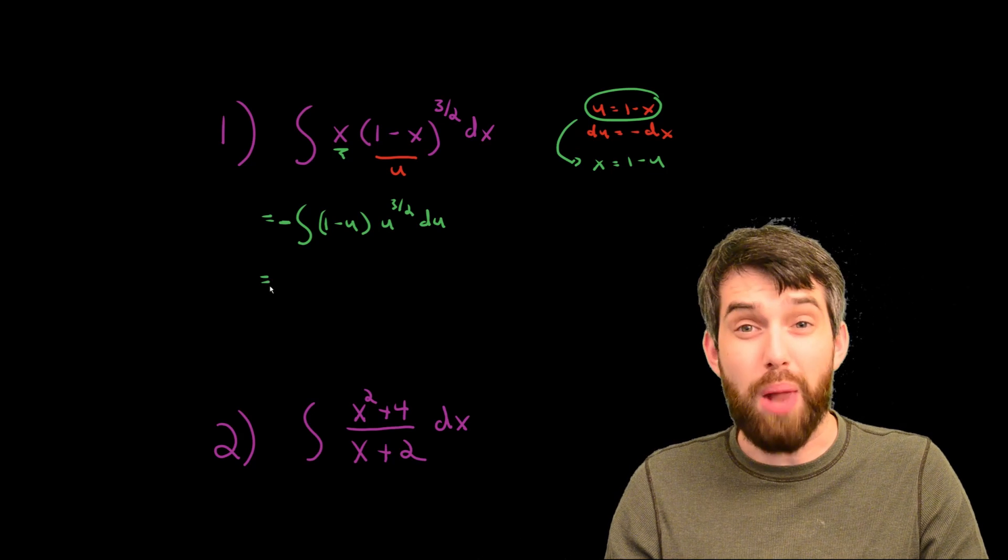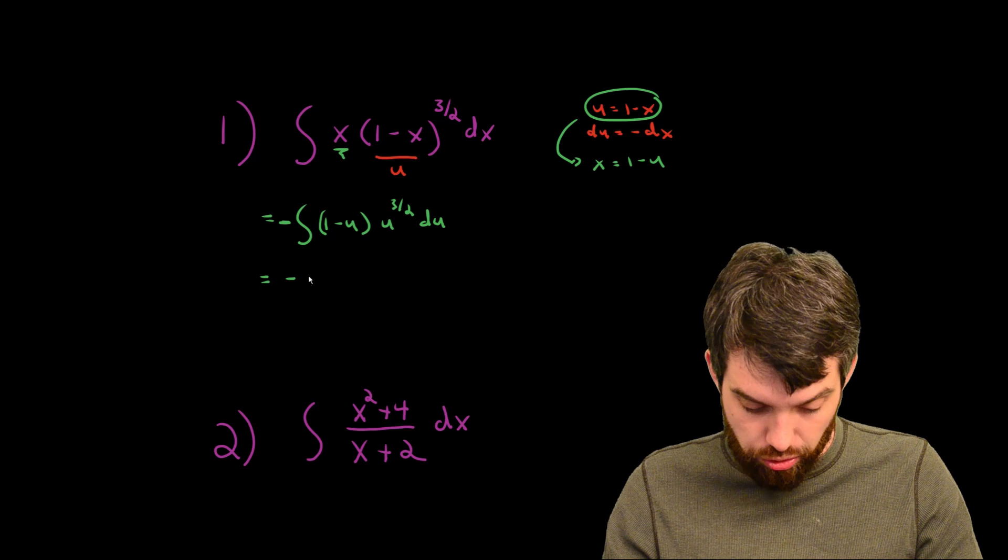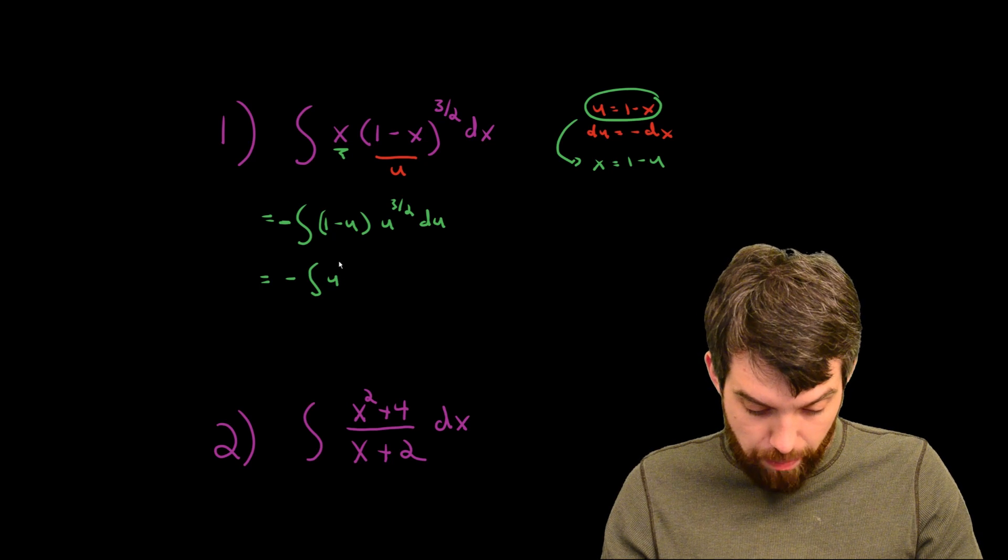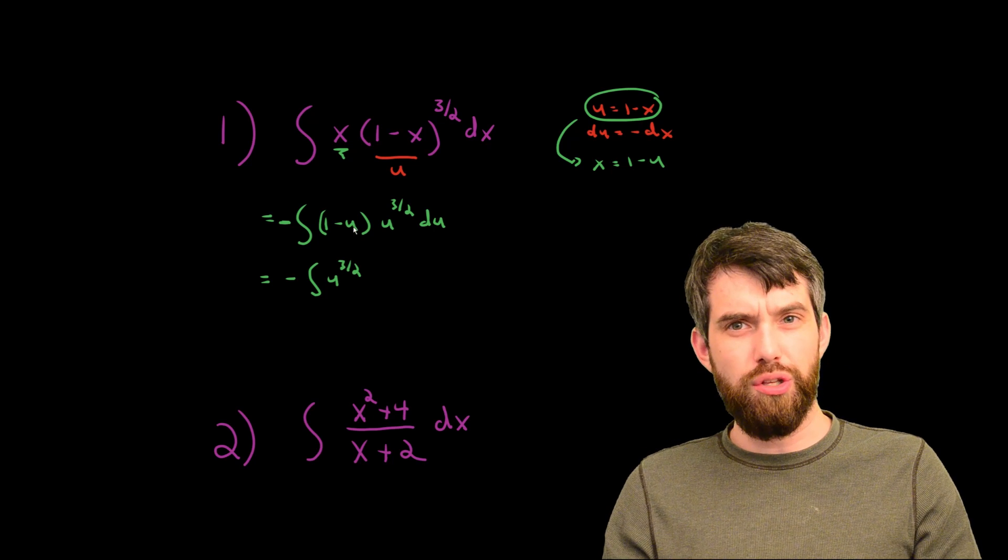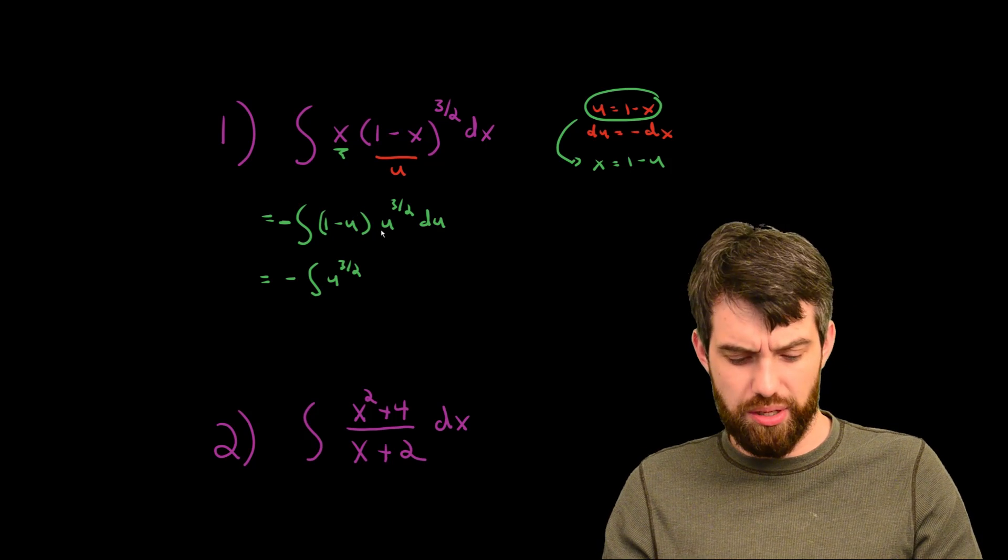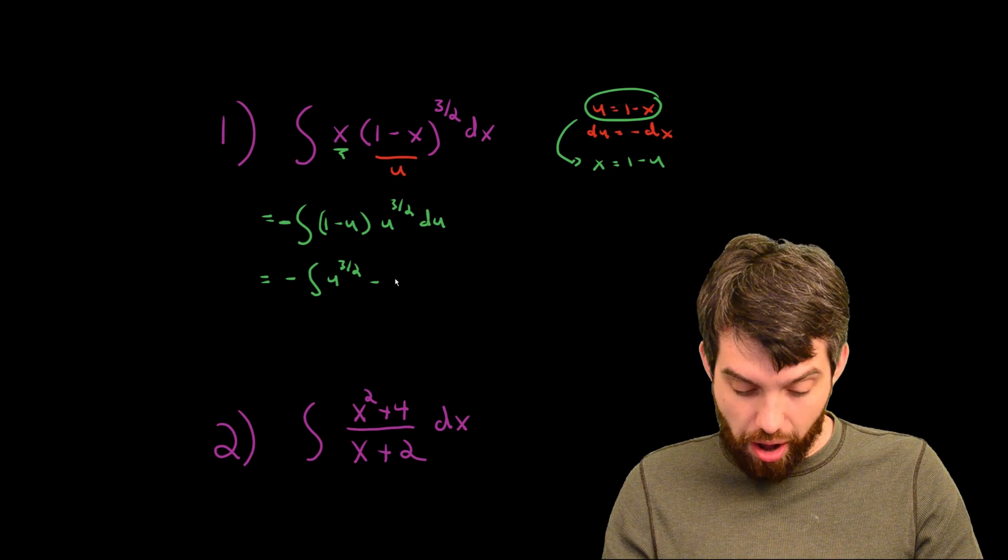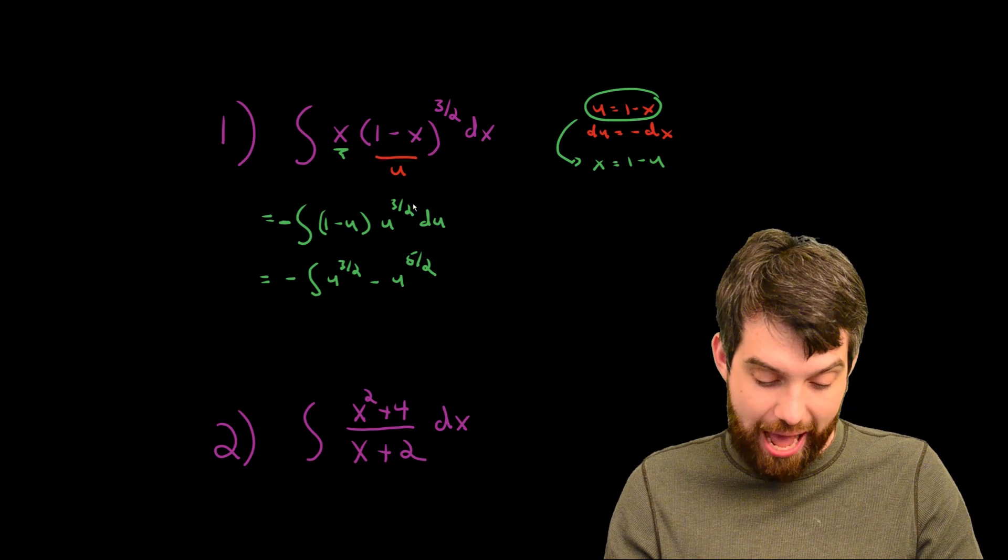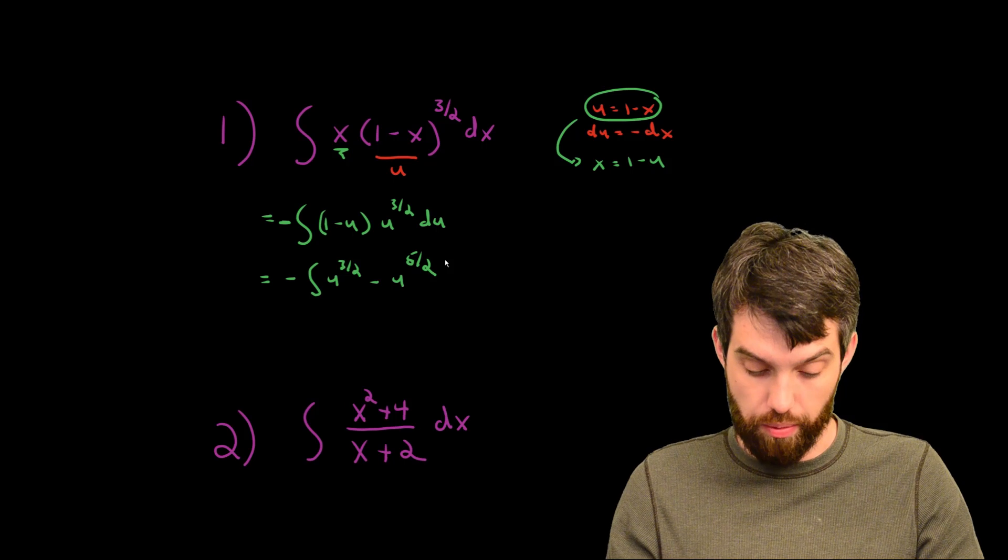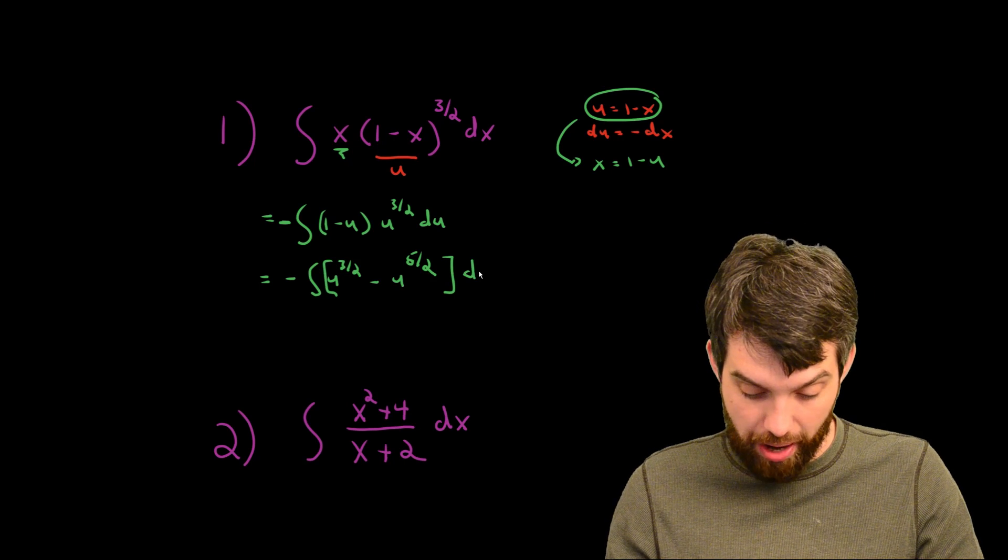Now this is something that I think I can manipulate. I'm going to multiply it out. This is minus, first of all, the 1 and the u creates u to the power of 3 halves. And then I'm going to have a minus u to the 1 times u to the 3 halves. In other words, what I'm really subtracting off is u to the power of 5 halves. So it's u to the 3 halves minus u to the 5 halves all multiplied by du.